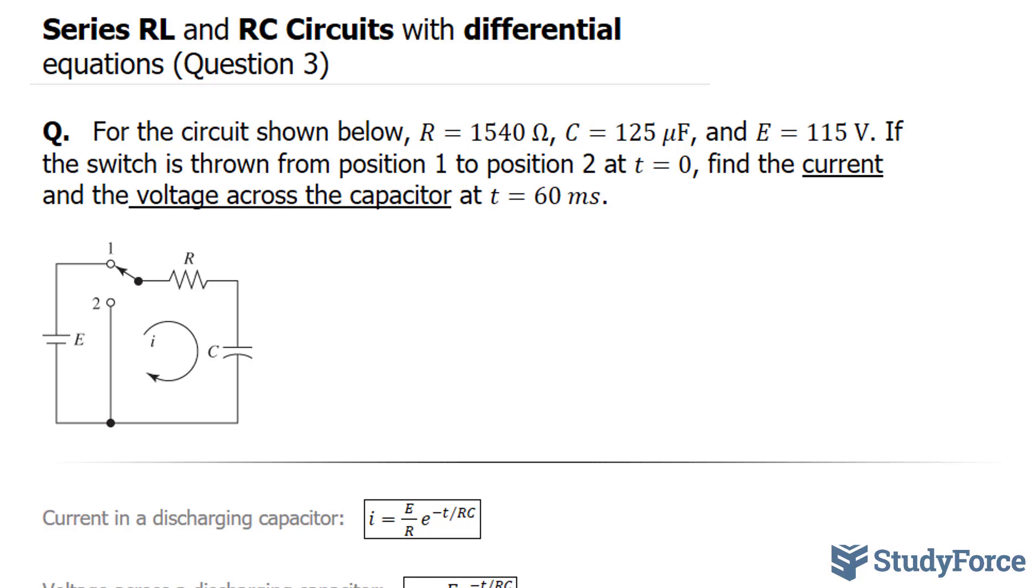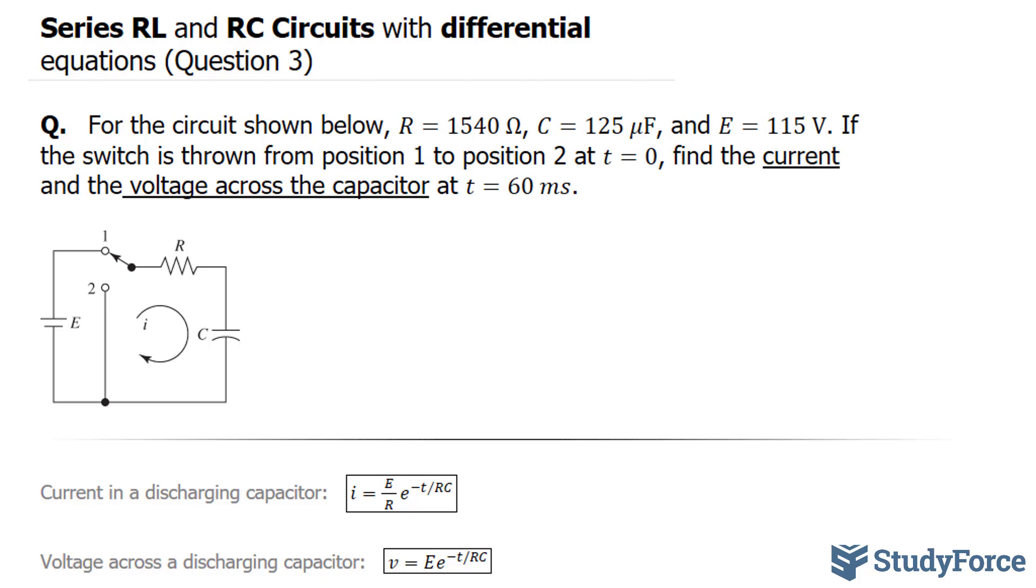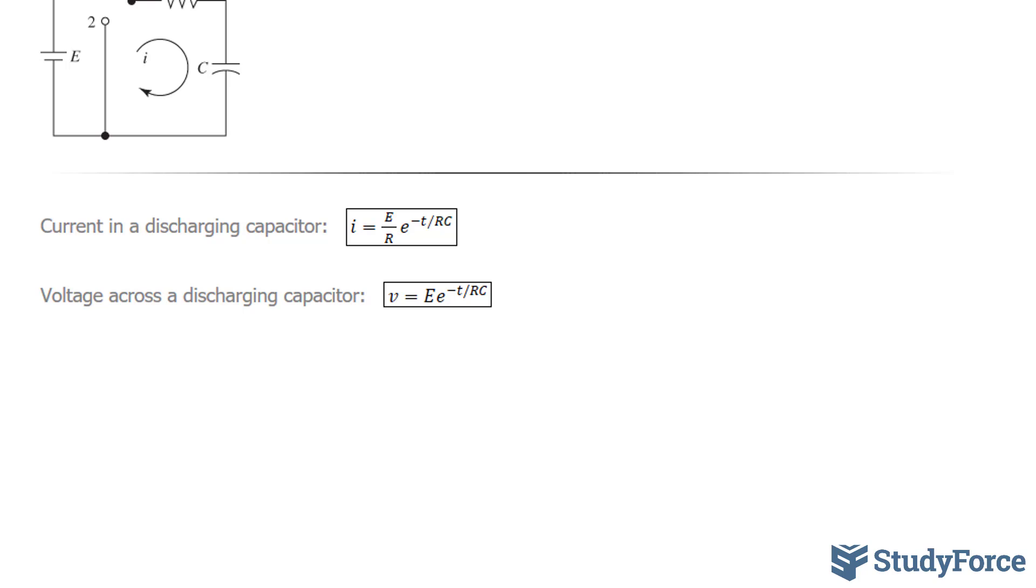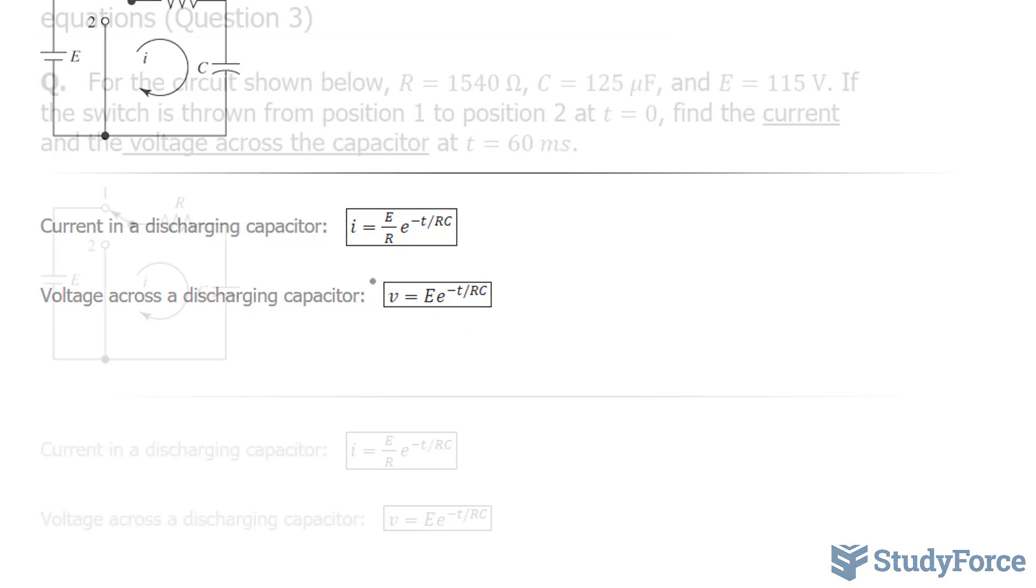Now this question is a continuation of what we did in question two of this series. In question two, we found the formulas for the current in a discharging capacitor, shown right here, and the voltage across a discharging capacitor, and the formula is shown right there.